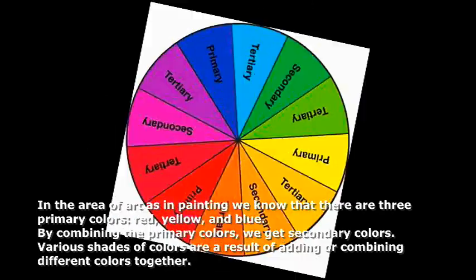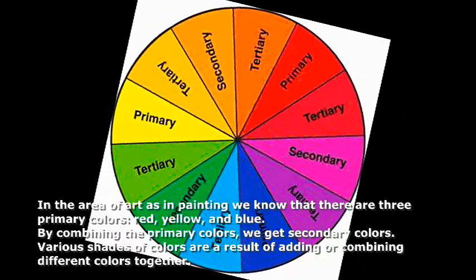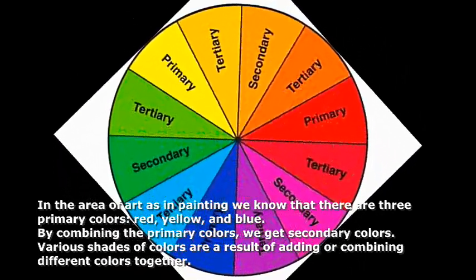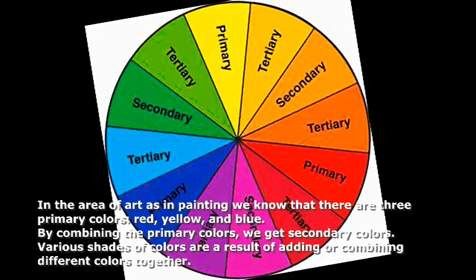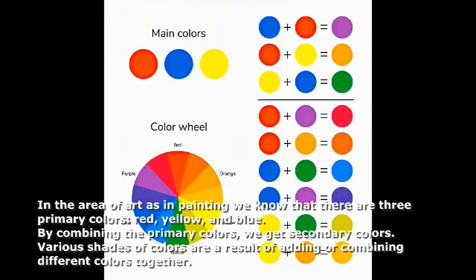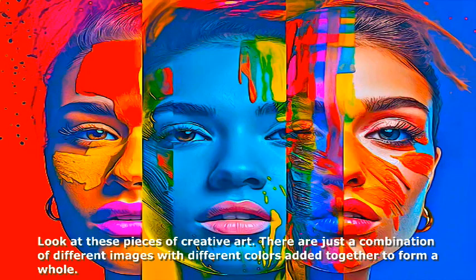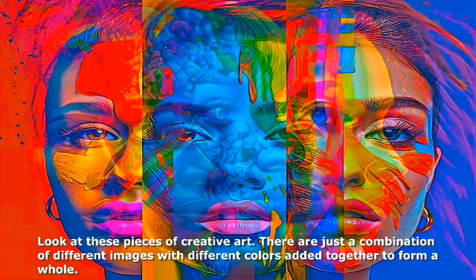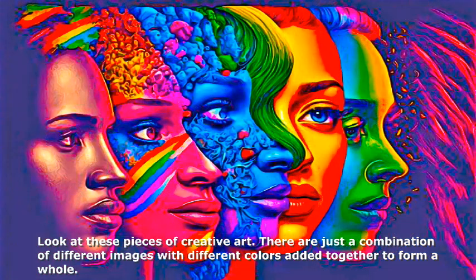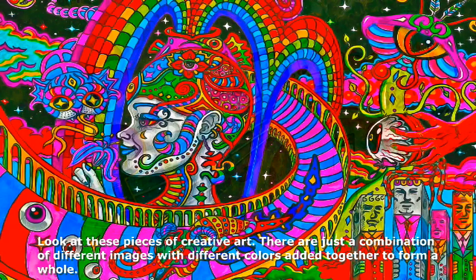In the area of art, as in painting, we know that there are three primary colors: red, yellow, and blue. By combining the primary colors, we get secondary colors. Various shades of colors are a result of adding or combining different colors together. Look at these pieces of creative art — they are just a combination of different images with different colors added together to form a whole.